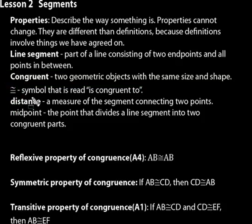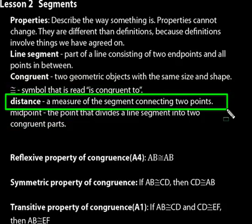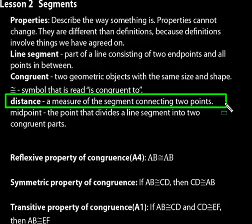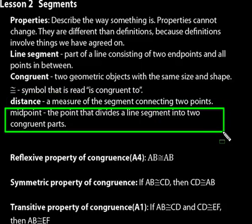Distance is a measure of the segment connecting two points — the measure of how far apart they are. Sometimes we use units with that, like feet, inches, or miles. In this lesson, we won't be so concerned about units; most things will just be numerical measurements. Midpoint is the point that divides a line segment into two congruent parts — you could lay one part on top of the other and they'd be identical.